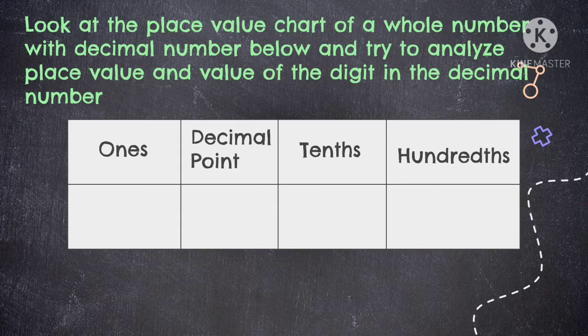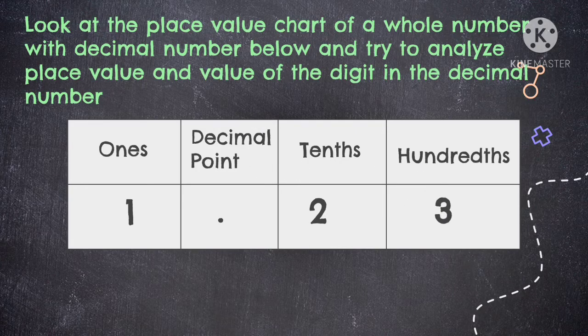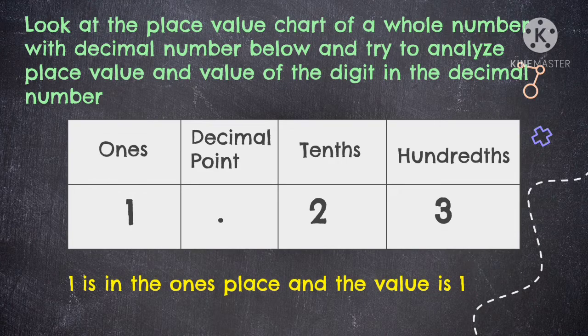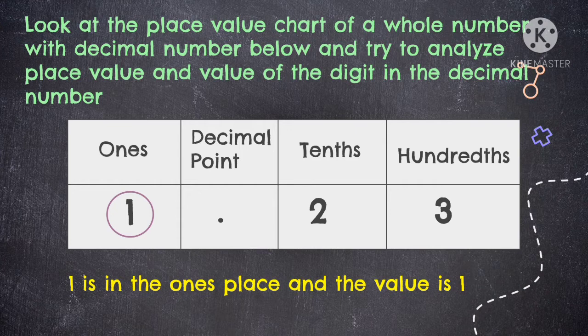If you remember, the place value of the whole number starts at ones, followed by tens, hundreds, and so on. So let's have an example. We have 1.23. We're going to identify the place value of the digits using our place value chart. So 1 is in the ones place and the value is 1.